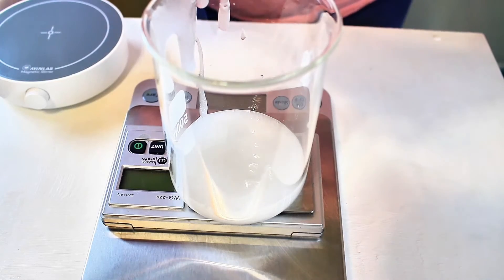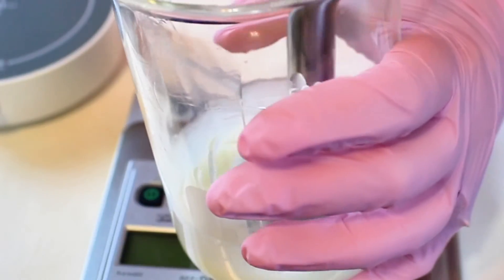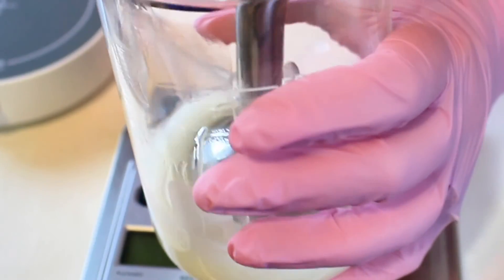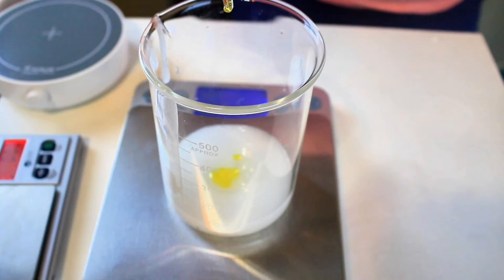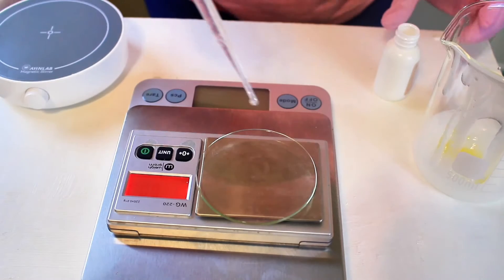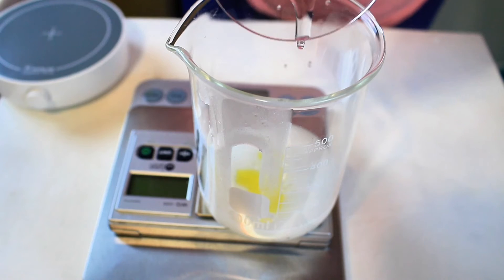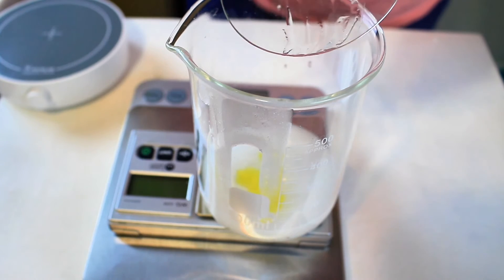So anyway, here we go. I'm gonna go ahead and mix this up a little bit until it gets the consistency that I like. Now I'm adding my tocopherols, 0.10 grams. Next I add 0.40 grams of Liquid Germall Plus, the preservative. And then I mix it just a little bit more.